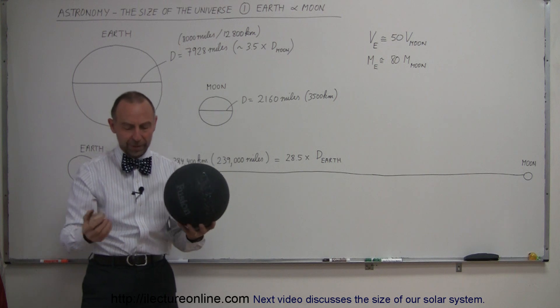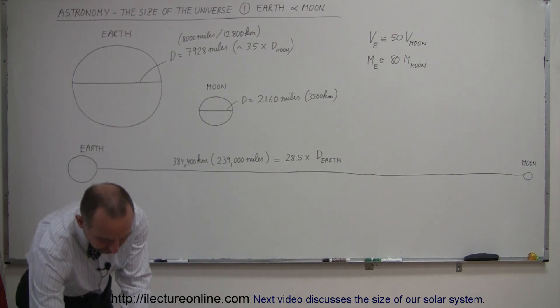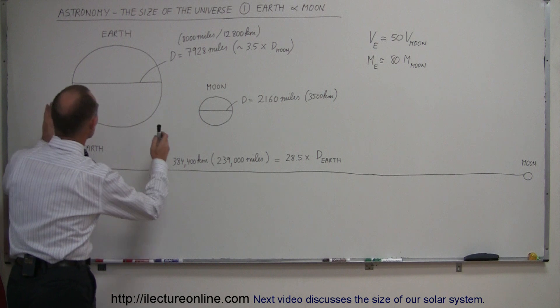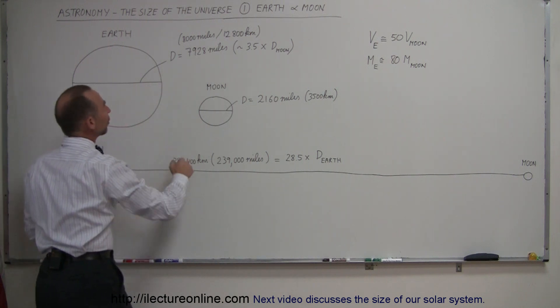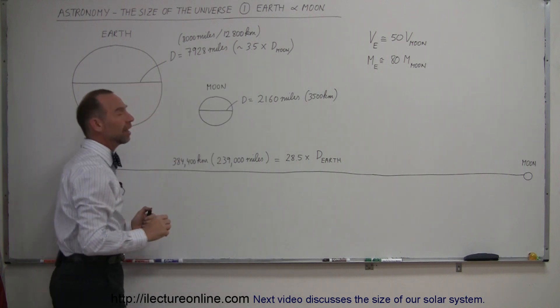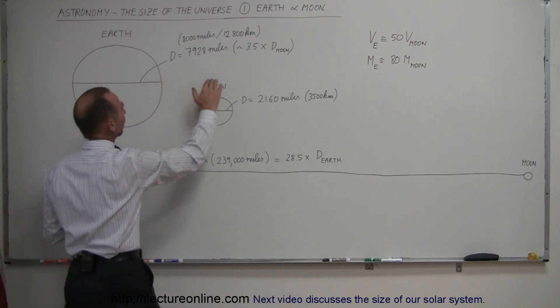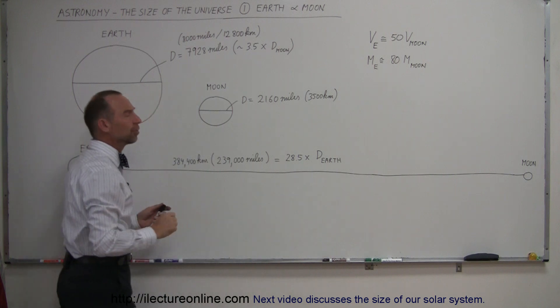You can see the Earth is quite a bit bigger than the Moon. To get a feel for some of the numbers involved, here's the Earth, and the diameter of the Earth is about 8,000 miles, which is about 12,800 kilometers. Diameter-wise, the Earth is roughly about 3.5 times the diameter of the Moon.